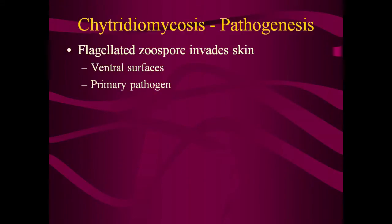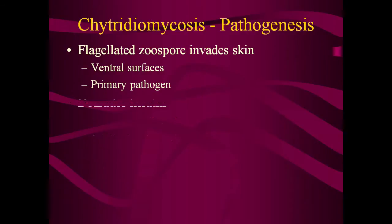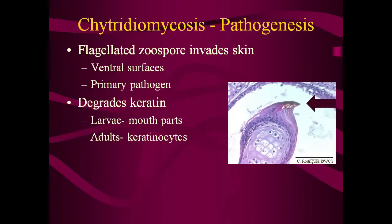The pathogenesis is not completely understood, but it is thought that the flagellated zoospore is the primary means of dispersal. The zoospore directly invades the amphibian skin, particularly the ventral surfaces where the animal touches the ground. The organism is a primary pathogen and does not need abrasion in the skin or other infectious agents present to be pathogenic. The fungus degrades keratin and so targets the keratinized anatomy of the amphibian. In larvae, the only keratinized structures are the mouth parts. In adults, the infection is limited to the keratinized layer of the skin.